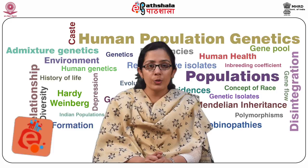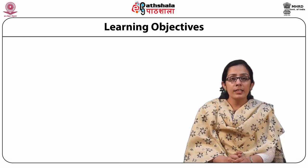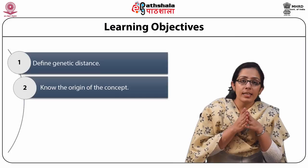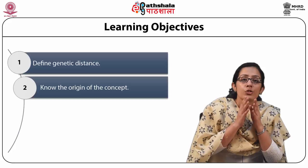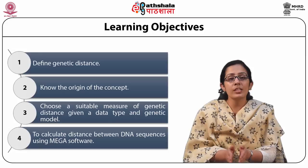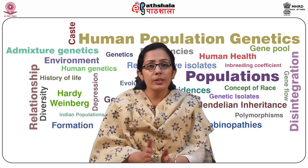Today we will start with the module Genetic Distance from the paper Human Population Genetics. The learning objectives of this module are: first, to define genetic distance; second, to know the origin of the concept of genetic distance; third, to choose a suitable measure of genetic distance given a data type and genetic model; and lastly, to calculate distance between DNA sequences using MEGA software.